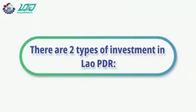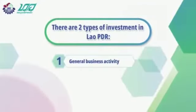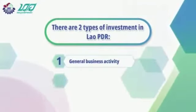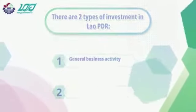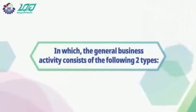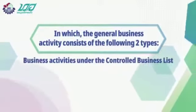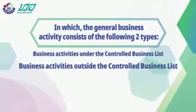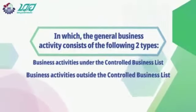There are two types of investment in Laos PDR: 1. General Business Activity, and 2. Concession Activity. The general business activity consists of two types: business activities under the controlled business list, and business activities outside of the controlled business list.